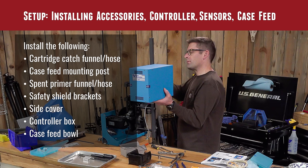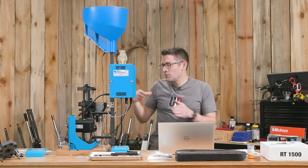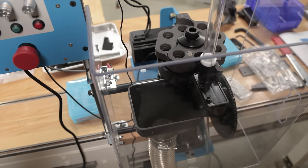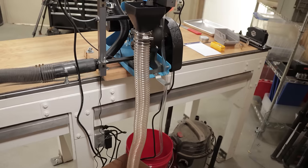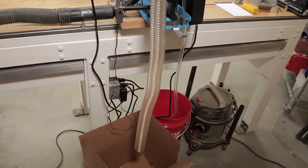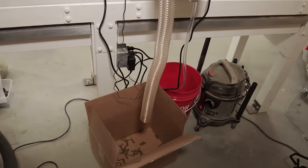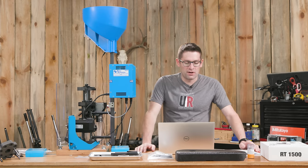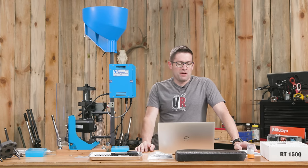Next, accessories, the controller, sensors, and case feed. So there's this large cartridge catch funnel. This is really cool. It's this huge rectangular funnel that goes down into this giant hose. And you put the end of the hose in your box or your bin, whatever it is that your processed cases or completed cartridges are going to fall into depending on if you have a CP2000 or an RL1100. Love the industrial nature of that.